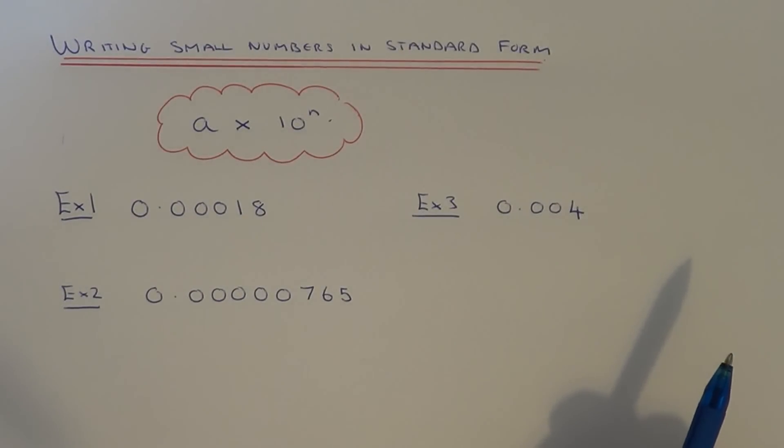Today I'm going to show you how to write down small numbers in standard index form. If you're looking at a small number, the number has to be between 0 and 1. So we're looking at 0 point something numbers.